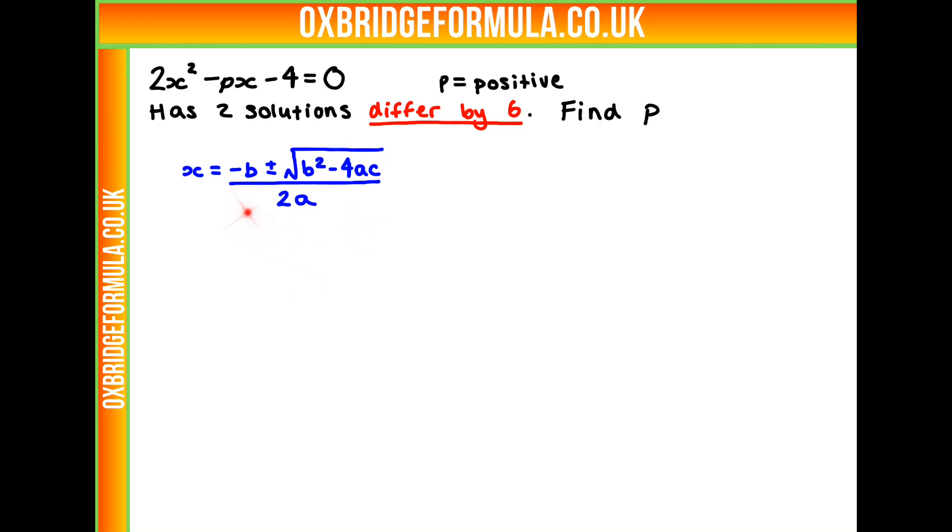And from this, we can just substitute in our a, b's and c's. That's our first coefficient, second coefficient and third. So, that will be p plus and minus the square root of p squared minus 4 times 2 times minus 4 all over 2 times 2. You can simplify that down to p plus or minus the square root of p squared plus 32 over 4.